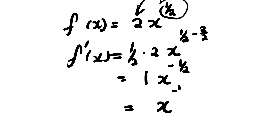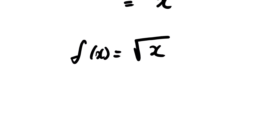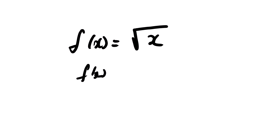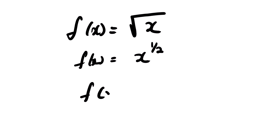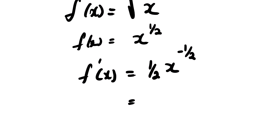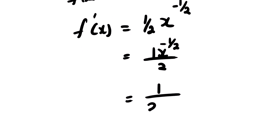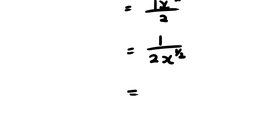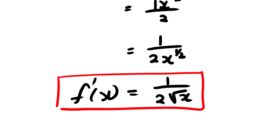Let's look at the radical function: the square root of x. We start by standardizing it — removing the radical and expressing it as x to the power 1/2. Applying the power rule gives us one-half times x to the power negative 1/2, which can be written as 1 over 2√x. That's it for this lesson video. Thank you very much.